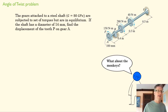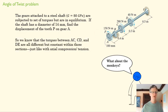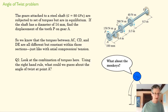We've got these gears in equilibrium, and we want to find the displacement of tooth P on gear A. The resultant torques in all of these sections are all different, so we're going to try and find those.